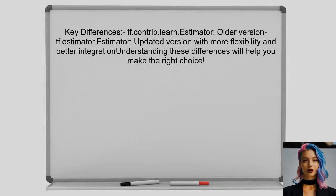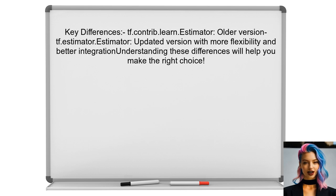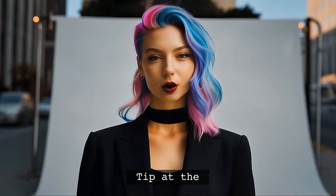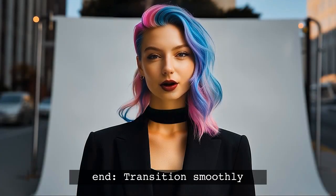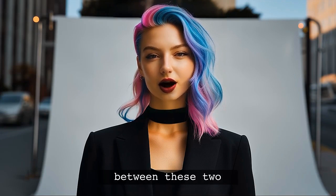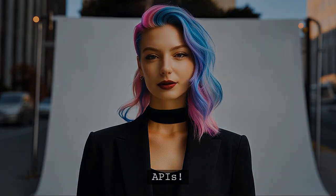So what are the key differences? The tf.contrib.learn.estimator was part of an earlier version of TensorFlow, while tf.estimator.estimator is the updated version that provides more flexibility and better integration with TensorFlow's ecosystem. Understanding these differences will help you make the right choice for your project. And at the end of this video, I'll share a tip that can help you transition smoothly between these two APIs.